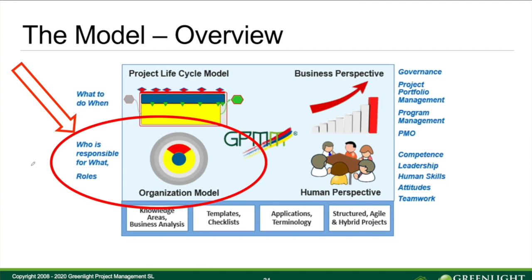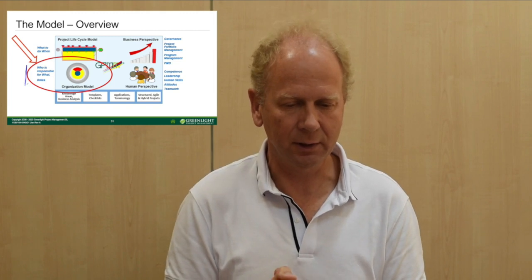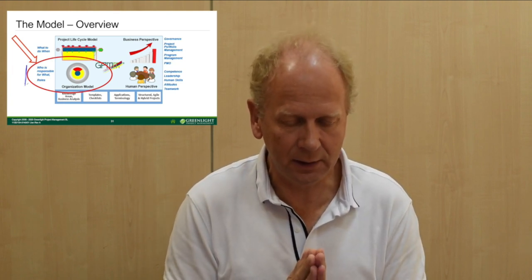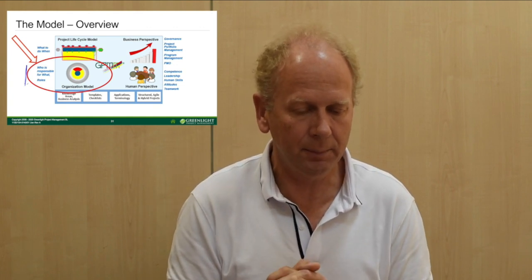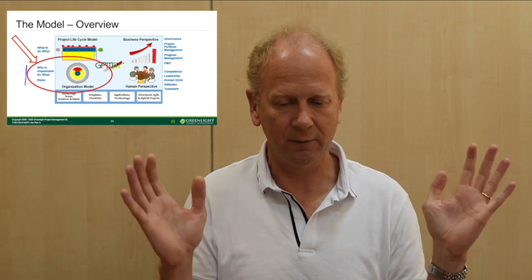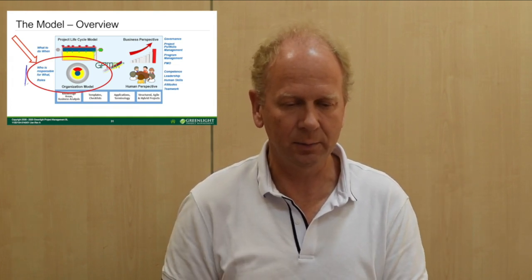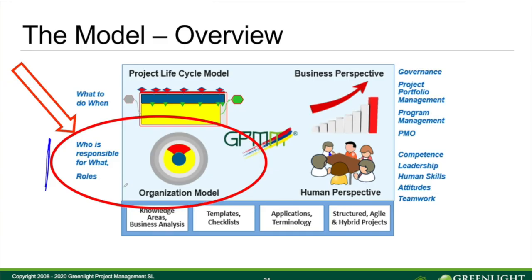Let's have a look at the organization model — who is responsible for what, and the roles. I can also mention that when this model was first defined, we actually only focused on the project lifecycle model. But to be successful continuously in projects, we realized we need to take a much wider view, not only looking at individual projects. Because typically big organizations have many projects going on at the same time, and to ensure all projects are successful you have to take a very wide perspective — considering the organization model, the business perspective, and the human perspective.